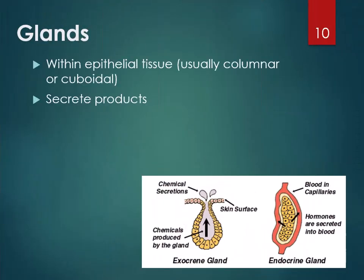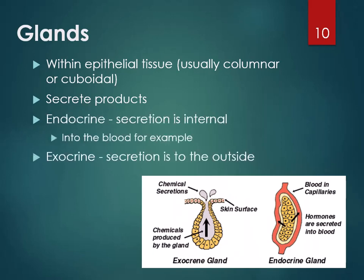Within epithelial tissue — usually columnar and cuboidal — you have glands. Glands always secrete a product, and they can be endocrine or exocrine. An endocrine gland secretes the product into the blood. An exocrine gland secretes to the outside. The digestive system is considered outside because it's a tube open at both ends — so secretions into the stomach or intestines are considered exocrine. Sweat glands are exocrine; hormone glands are endocrine, secreting products like hormones into the blood.